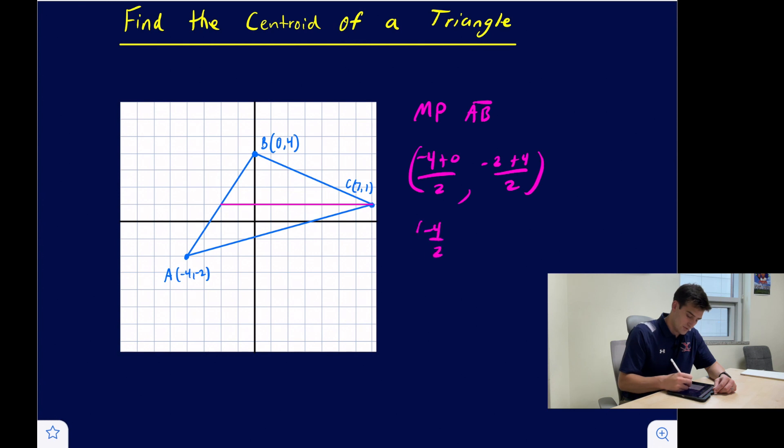This is just negative four over two and this is two over two, so this gives us negative two comma one. And what do you know, negative two comma one, that is where the midpoint is located.